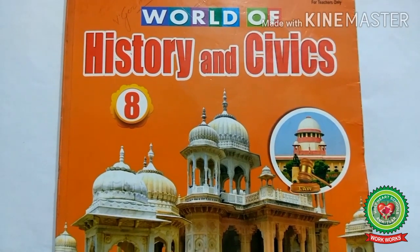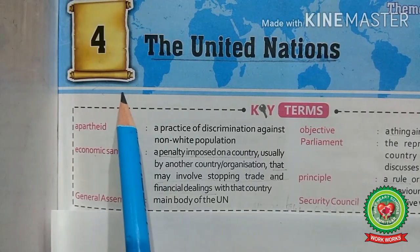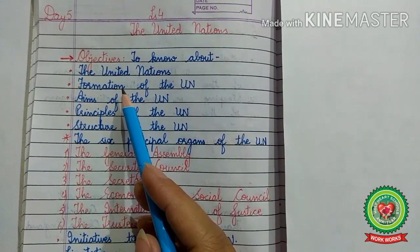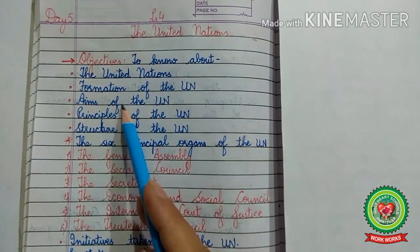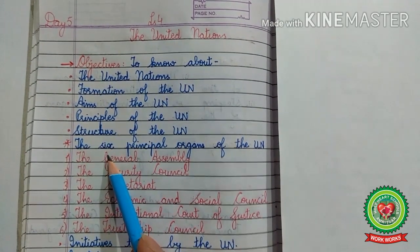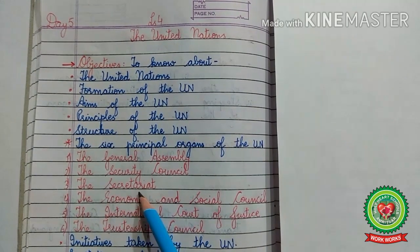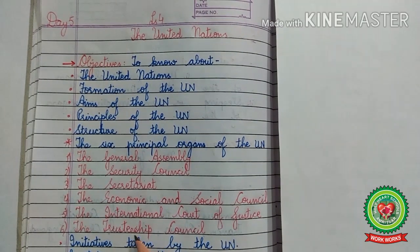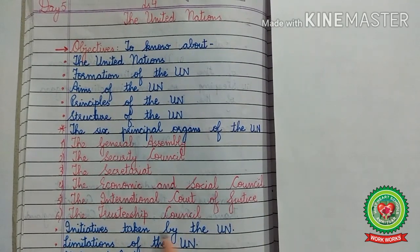Hello everyone, open your History and Civics book, Class 8, Lesson 4: The United Nations. In this lesson we had learnt about what is the United Nations, formation of the UN, aims and principles of the UN, and the structure of the UN, which included the six principal organs: the General Assembly, the Security Council, the Secretariat, the Economic and Social Council, the International Court of Justice, and the Trusteeship Council.